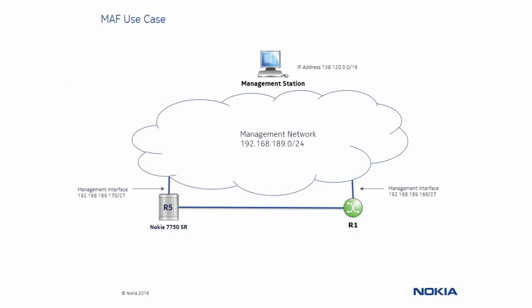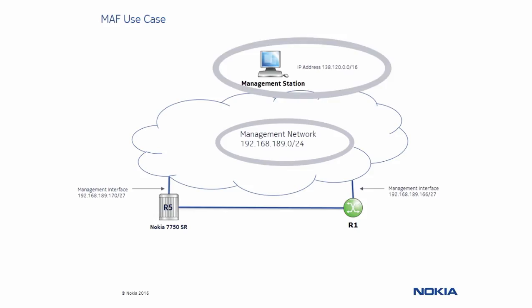Let's talk about our next use case: Management Access Filters. In this use case, we have two routers with connections from an out-of-band network of 192.168.189.0/24. The network operator has been advised to only allow the network 138.120.0.0/16 to be able to telnet to router R5. All other telnet connections should be dropped. We are to use a default action of permit in this use case. If using a default action of deny, take special attention to not lock yourself out of the Nokia 7750 service router. Router R1 will attempt to connect to router R5 through the management network and be dropped, while the management station should connect successfully.